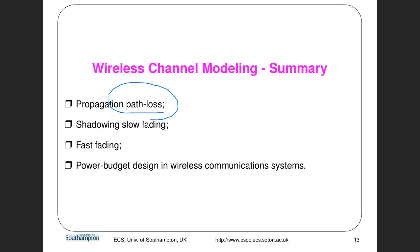There are three methods in path loss. First is free space propagation path loss, which models the case when there is only a line-of-sight. The second method is the ground reflection two-ray path loss model, which models the case where you have a line-of-sight and also a reflected link. The second level is shadowing effect, which is also called shadowing fading.